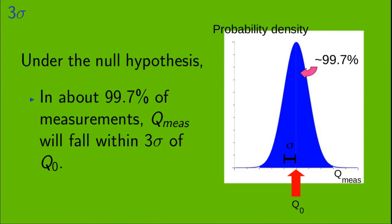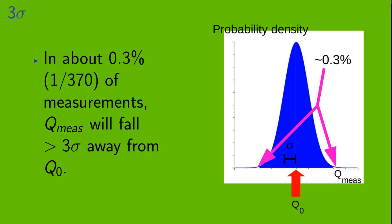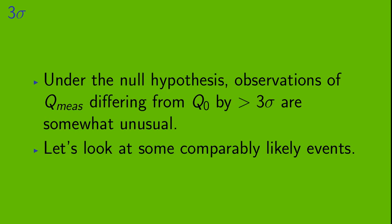Okay? Three sigma. Under the null hypothesis, in about 99.7% of measurements, Q measured will fall within three sigma of Q0. And that means that in about 0.3% of measurements, or slightly more precisely, in about one out of every 370 measurements, Q measured will fall more than three sigma away from Q0. Okay, so under the null hypothesis, observations of Q measured differing from Q0 by more than three sigma are somewhat unusual. Let's look at some comparably likely events.